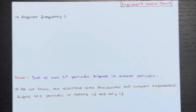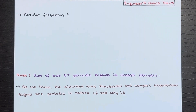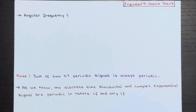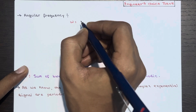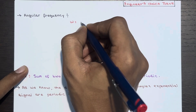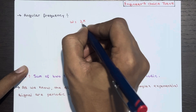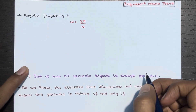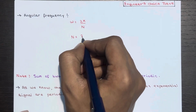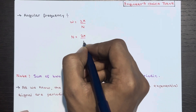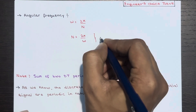We already know about angular frequency from the sinusoidal sequence topic. The formula for angular frequency is ω = 2π/N. From this we can calculate that N = 2π/ω, and this is the formula for the fundamental period.